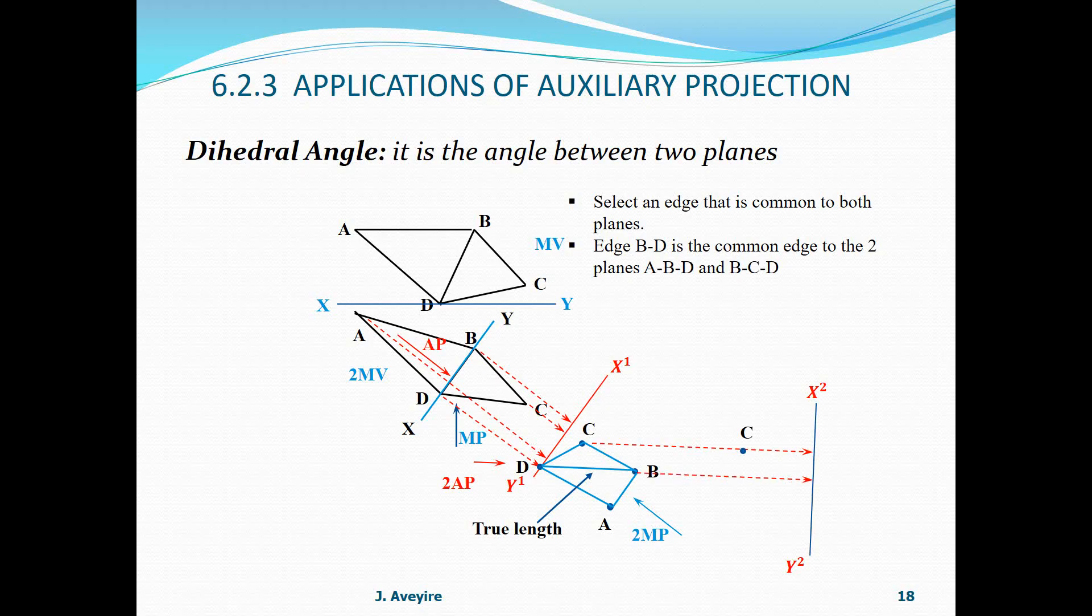Then, the next point is B. We now look at B with respect on the top view or 2MV, and that is zero. Likewise, D is zero. Then, we go in for our last point, that is A. A is now a positive distance.